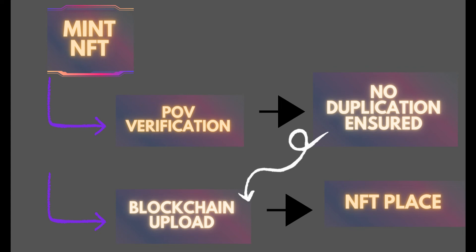For example, if OpenSea integrates itself with Veracity's protocol, it will have 100% fraud control. If you buy a CryptoPunk NFT, that particular CryptoPunk will be only yours — even if someone saves it, copies it, and tries to sell it on another marketplace or blockchain, it will be rejected. If they polish this to its highest level, the whole licensing, franchising, and copyright market will be under Veracity.